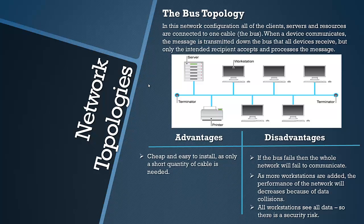An advantage of the bus topology is that it's cheap and easy to install as only a small quantity of cable is needed — it requires the least cable of the topologies we'll cover, so it's good for smaller scale operations. However, if the bus cable fails then the whole network fails to communicate. Also, as more workstations are added the performance decreases because data collides — like a busy highway with more cars, the more devices, the slower it gets. Another disadvantage is that all workstations see all of the data, which presents a security and privacy risk.